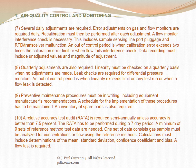Several daily adjustments are required. Error adjustments on gas and flow monitors are required daily, and recalibration must be performed after each adjustment. A flow monitor interference check is necessary, including sample sensing, line port plugage, and RTD transceiver malfunction. An out-of-control period is when calibration error exceeds two times the calibration error limit or when flow fails the interference check. Data recording must include unadjusted values and the magnitude of adjustment. Quarterly adjustments are also required; linearity must be checked quarterly when no adjustments are made. Leak checks are required for differential pressure monitors. An out-of-control period occurs when linearity exceeds the limit on any test run or when a flow leak is detected.